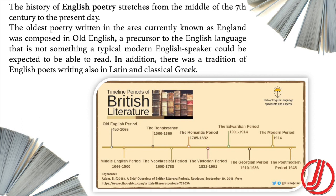The oldest written poetry currently known in English is composed in Old English. It is not understood in modern English, as it was composed in the tradition of Latin and classical Greek. This is a very interesting page of poetry history, and we can see that the classical and contemporary poetry traditions are quite different from each other.